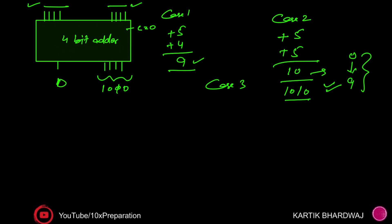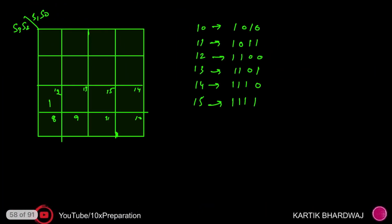The third case is when a carry is generated. For example, 9 plus 9 equals 18, which automatically goes out of the BCD range. The result in the adder will show 1000 with a carry-out of 1. Whenever a carry is generated, the result is out of range and you again need to add the correction factor 6. In all such cases, the correction factor must be applied.